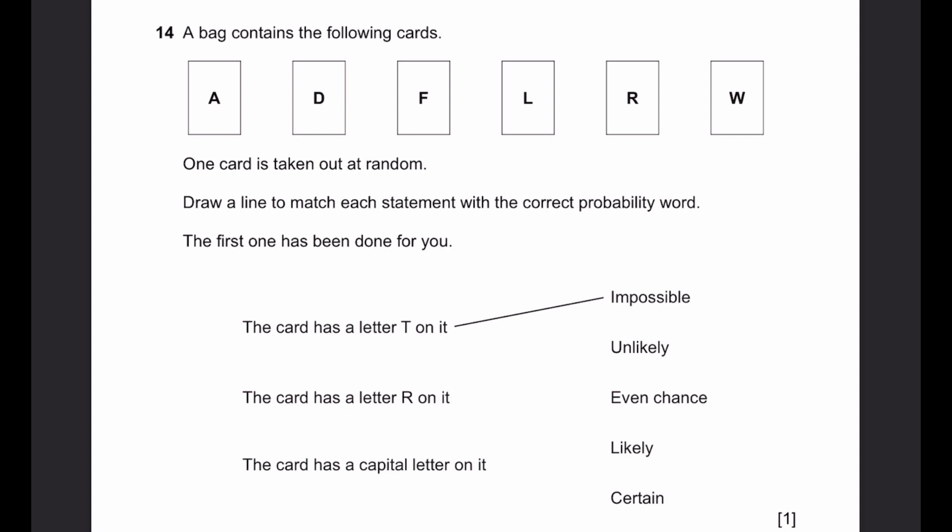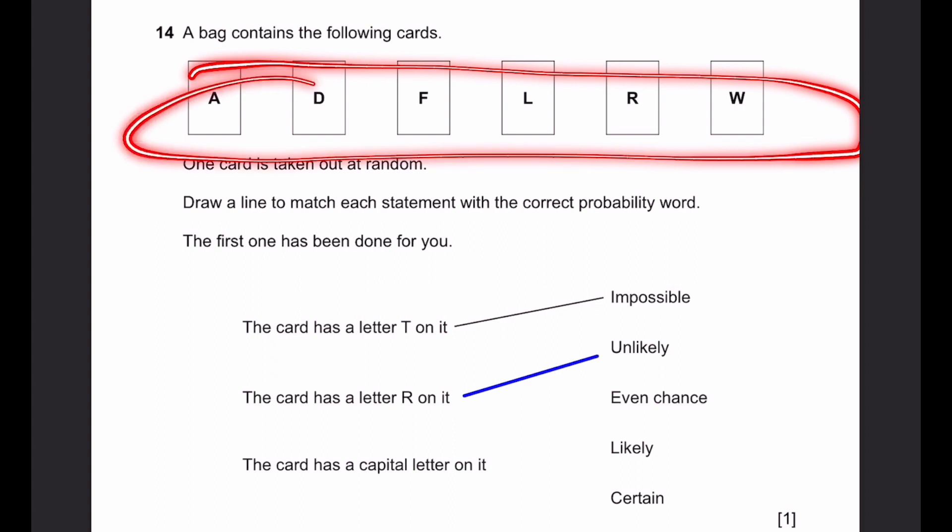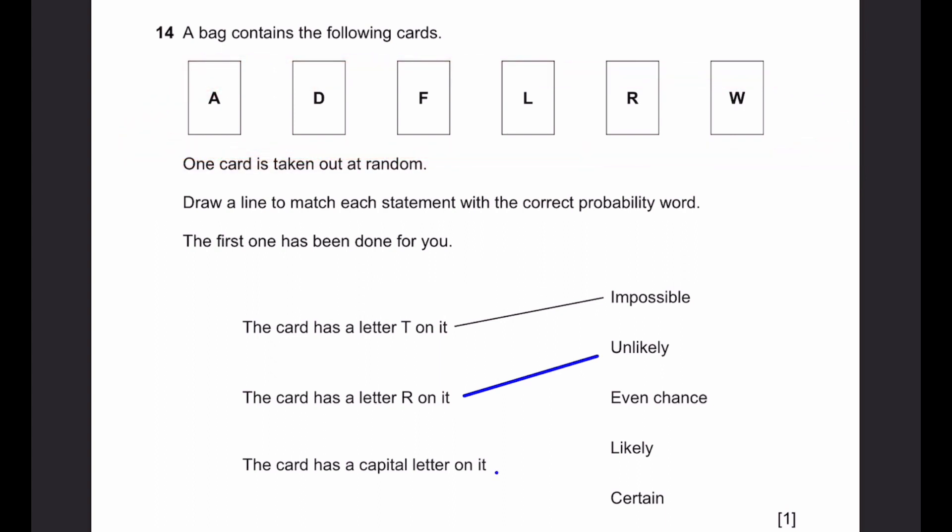Question 14. A bag contains the following cards: A, D, F, L, R, W. One card is taken out at random. Draw a line to match each statement with the correct probability word. The card has a letter T on it. It is impossible because there are no T's. The card has a letter R on it. There's only one R out of total 6, so 1/6, which is less than half, so it is unlikely. The card has a capital letter on it. All these are capital letters, so it is certain.